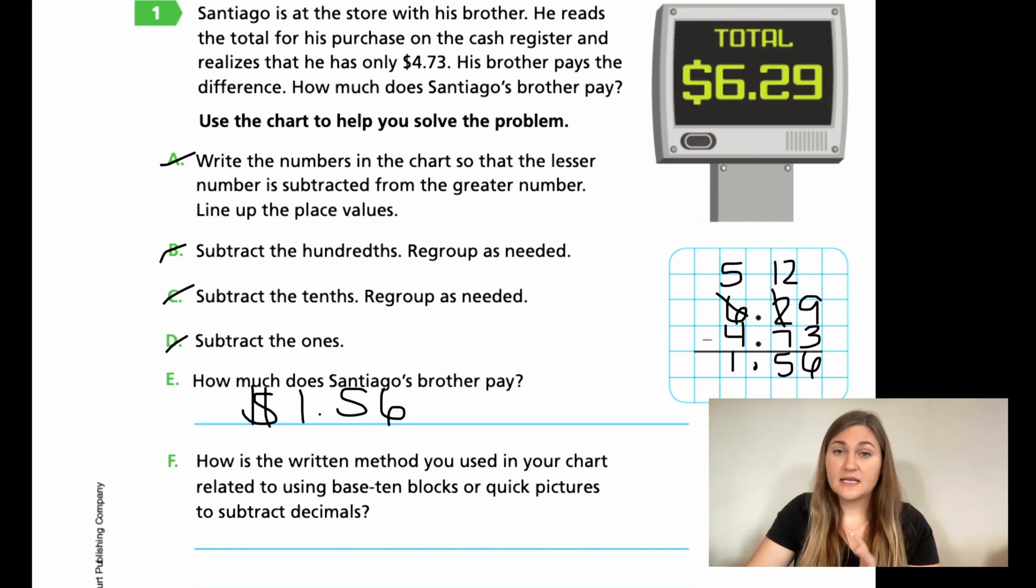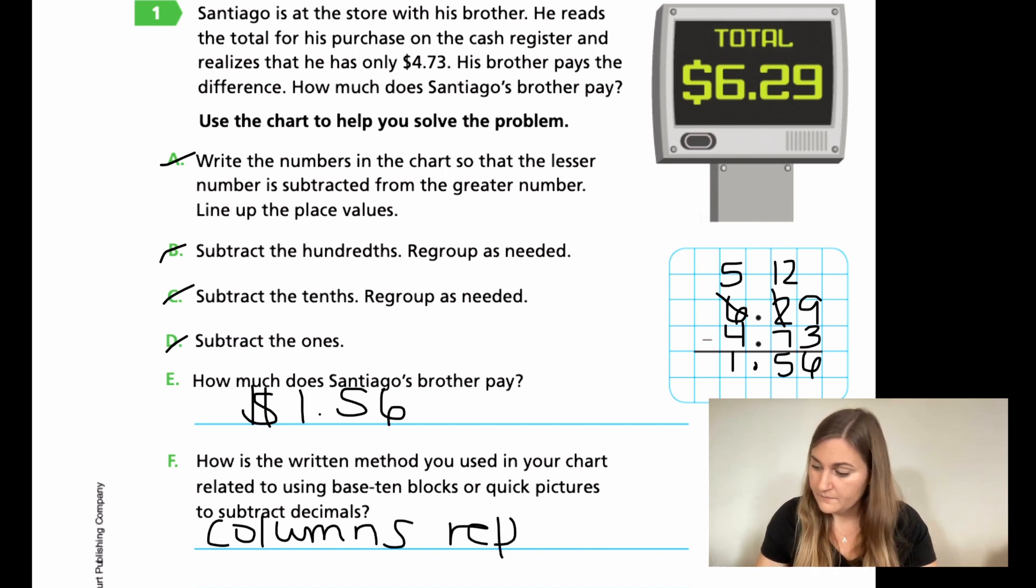Then for F, it asks us the same question in the previous problem. So I'm going to give a pretty similar answer. It says, how is the written method you used in your chart related to using base 10 blocks or quick pictures? Well, the columns are now just taking place of those blocks. So if I had blocks for hundreds right now, that column of hundreds is taking its place. So I'm just going to say columns represent place value blocks.